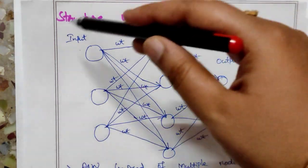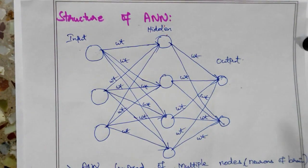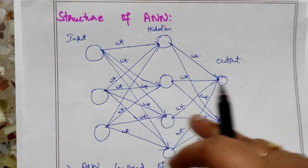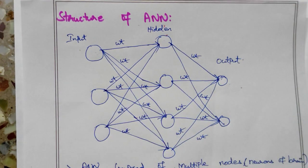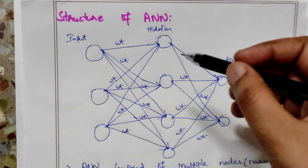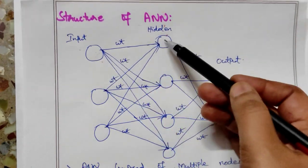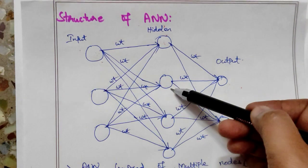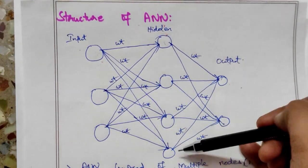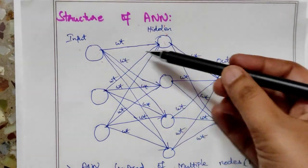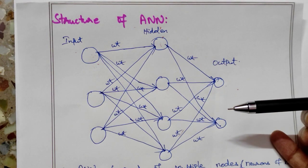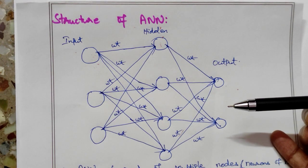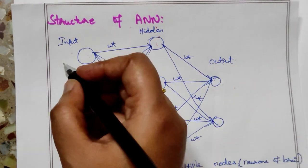The structure is composed of multiple nodes. Multiple node connections make up the artificial neural network structure. Each and every node is linked to each other, and nodes take input and perform some operations.